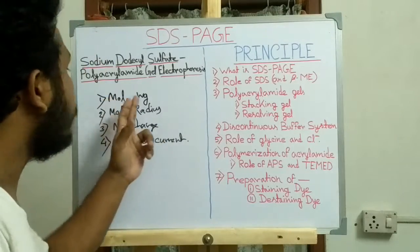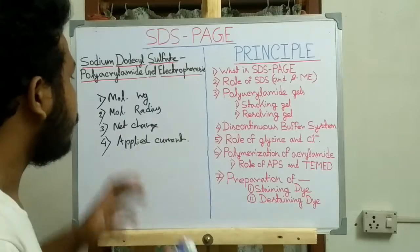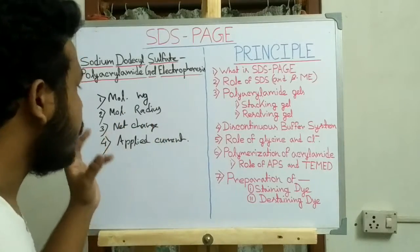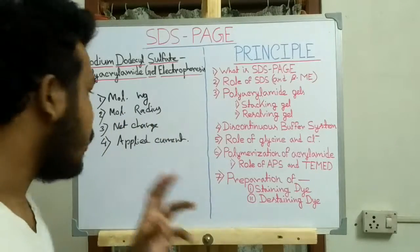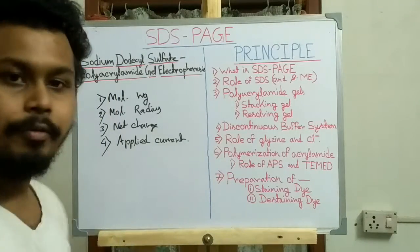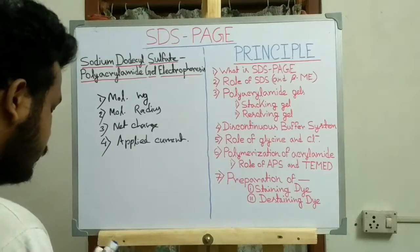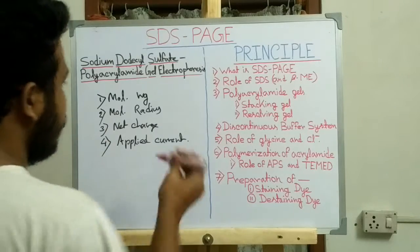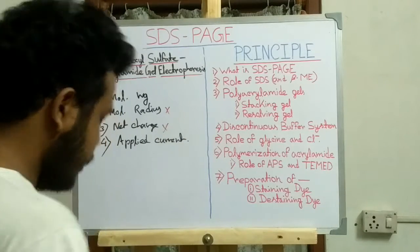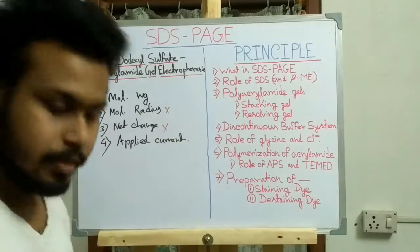In SDS-PAGE, we basically separate proteins only according to their molecular weight, and throughout the process we use a particular amount of current. So in this process we have to nullify the two factors — molecular radius and net charge — and this is done by SDS.